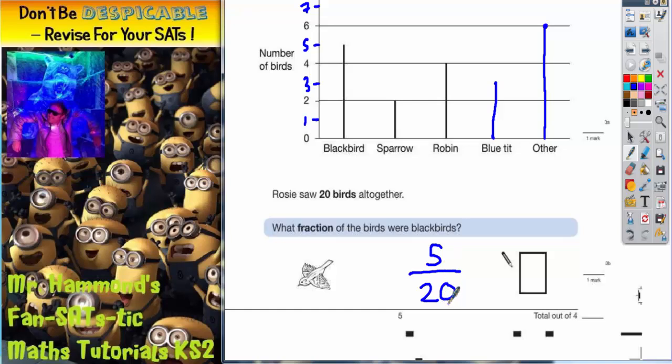If you do want to simplify that fraction, you may notice that both of these numbers are in the 5 times table. So if you divide both of them by 5, you would actually get a simplified answer. 5 into 5 goes once and 5 into 20 goes 4 times. So another answer you could put is 1 quarter. And that is a better answer. Though 5 out of 20 at this level should still get you the marks.